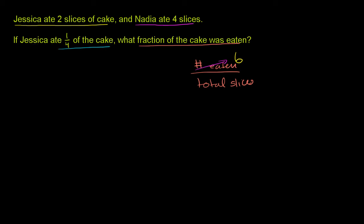So let me think of it this way. The fraction Jessica ate, so the two slices, two slices over the total slices is going to be equal to 1 fourth.